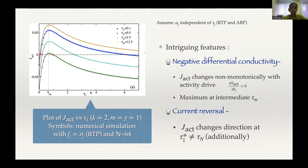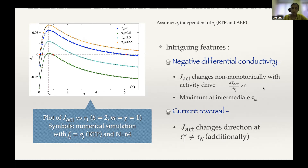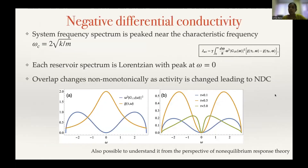If we plot this current as a function of one reservoir's activity τ1, keeping the other τN fixed, we see certain curious features. First, it is a non-monotonic function — the current first increases and then decreases. Moreover, there are points where the current reverses direction and becomes negative, which is not just at τ1 equal to τN. So we have two striking features: negative differential conductivity — current is a non-monotonic function of activity — and current reversal.